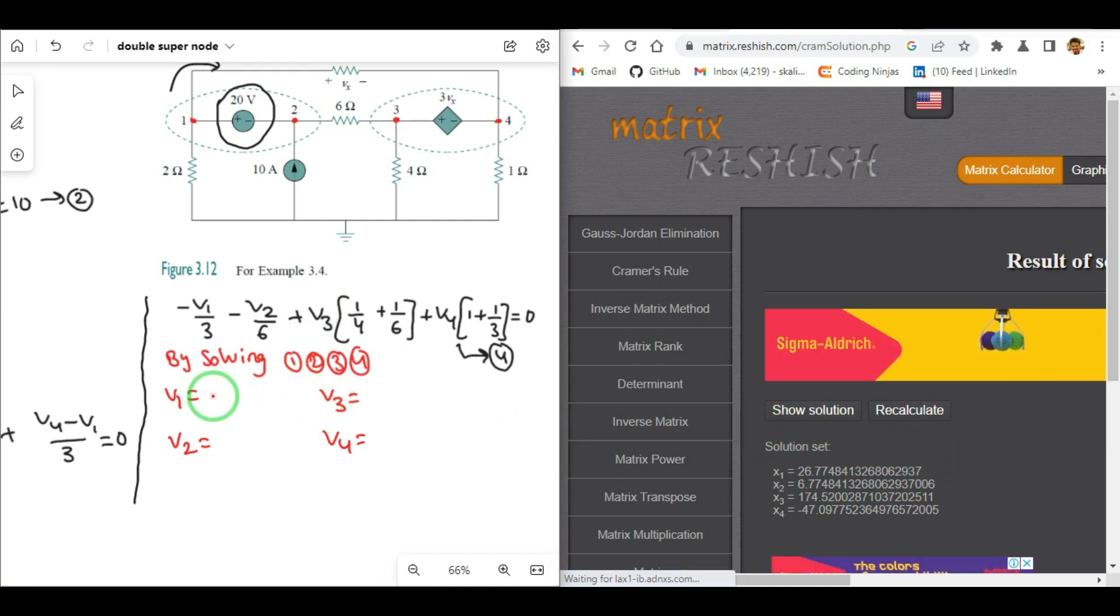V1, V2, V3, V4 are 26.7 volts, 6.77 volts, V3 is 174.5 volts, and V4 is minus 47 volts.